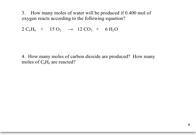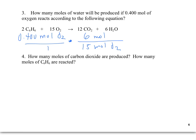Finally, we want to know how many moles of water will be produced if 0.400 moles of oxygen reacts according to the following equation. Using factor label, starting with 0.400 moles of oxygen, I cancel moles of oxygen — the coefficient in the balanced equation is 15 — and I want moles of water, whose coefficient is 6. The moles of oxygen cancel, and the answer is 0.160 moles of water.